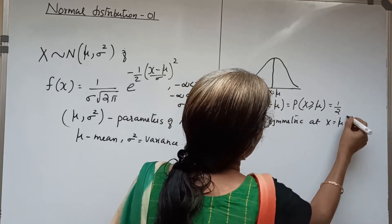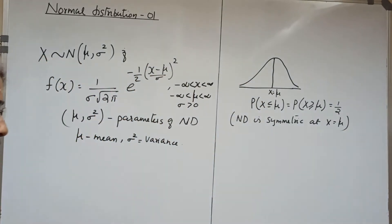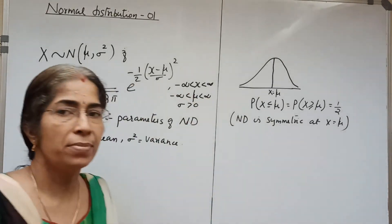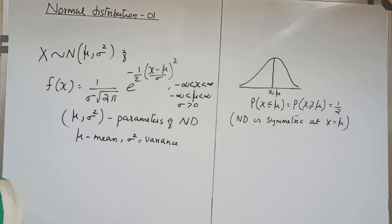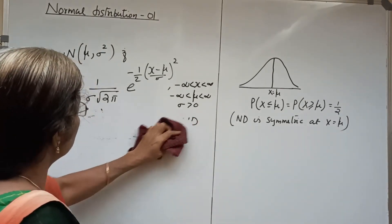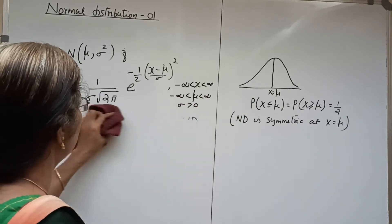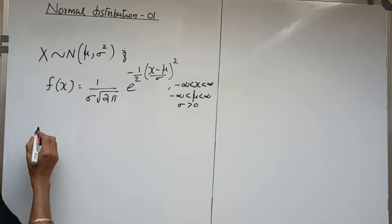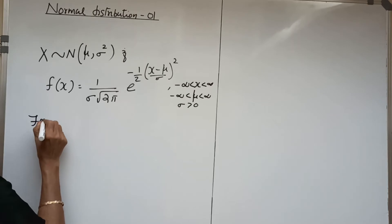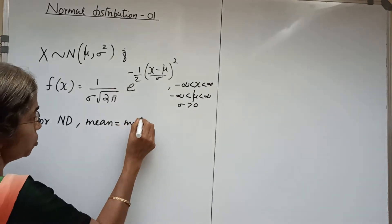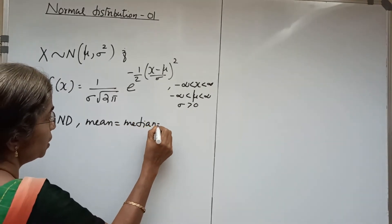We now move on to the properties of normal distribution. Firstly, we prove the result for normal distribution: mean equal to median equal to mode equal to mu. We consider the normal distribution PDF and prove that for normal distribution, mean equal to median equal to mode equal to mu.